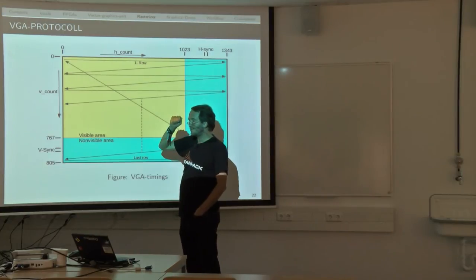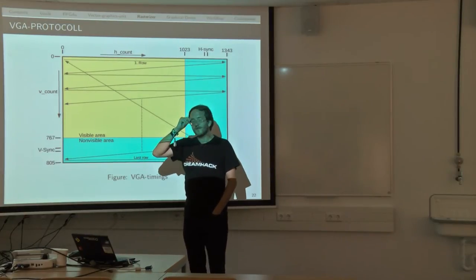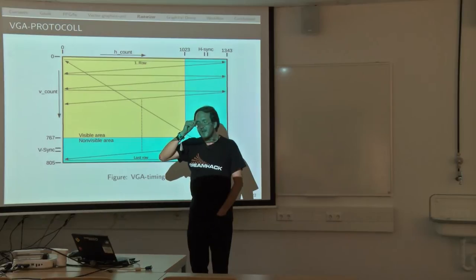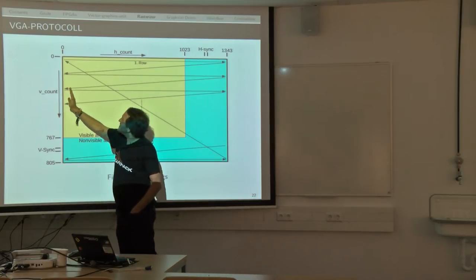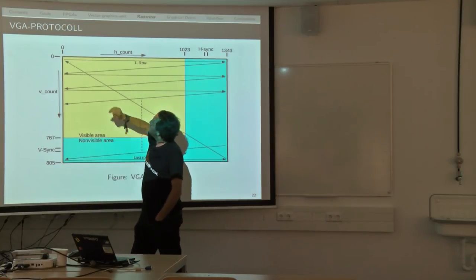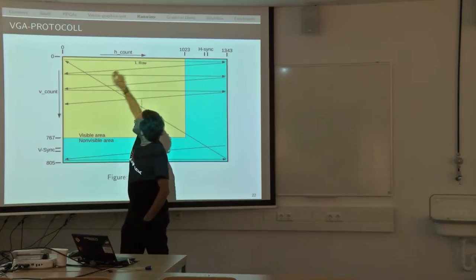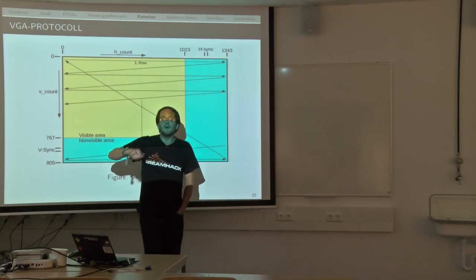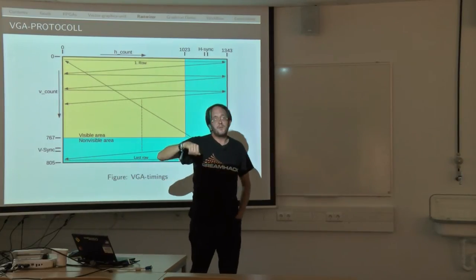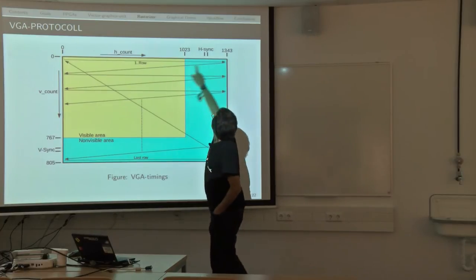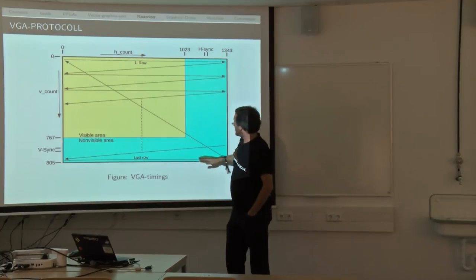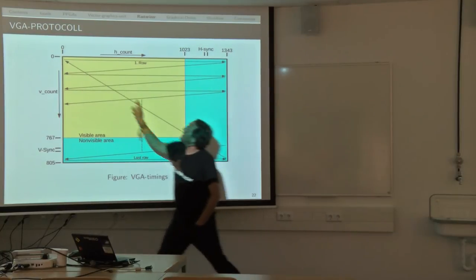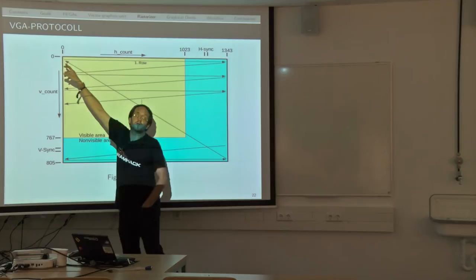There is a pixel clock. Depending on the VGA protocol, the pixel clock is in my case 65 megahertz, and it steps through the pixels. So we need counters — H-count and V-count. These counters work with the pixel clock, and every time H-count completes a line, we increment V-count by one, continuing until we reach the bottom of the picture and everything resets to zero.